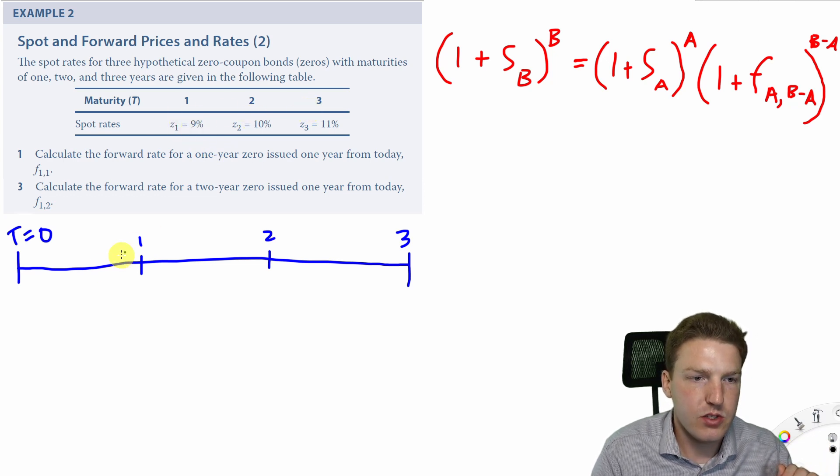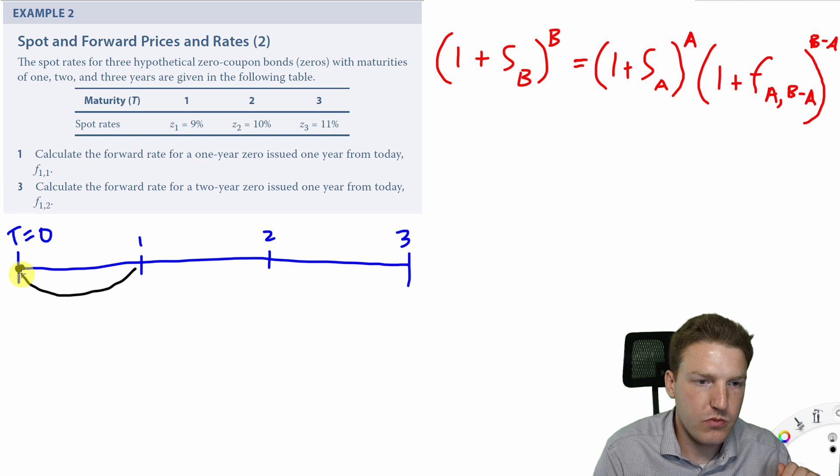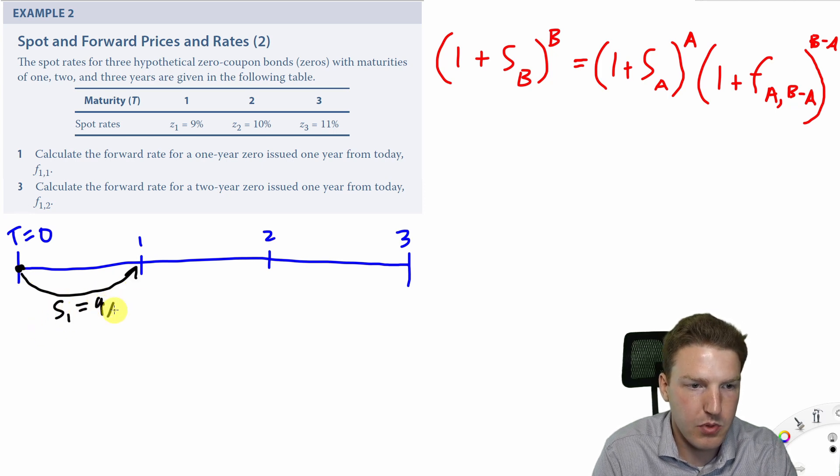So this basically just tells us the spot rates for years 1, 2, and 3. So if we look at our timeline, this is telling us that if we wanted to lend money for say 1 year, we could do so at a rate of 9%. So we'll say S1 equals 9%.